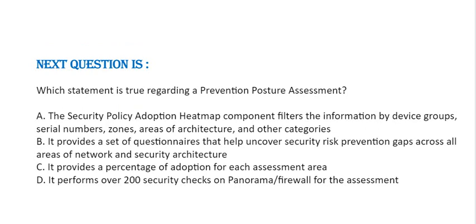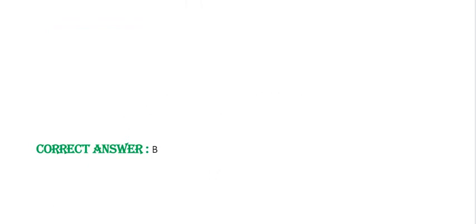Next question: Which statement is true regarding a prevention posture assessment? Option A: The security policy adoption heat map component filters the information by device groups, serial numbers, zones, areas of architecture, and other categories. Option B: It provides a set of questionnaires that help uncover security risk prevention gaps across all areas of the network and security architecture. Option C: It provides a percentage of adoption for each assessment area. Option D: It performs over 200 security checks on Panorama firewall for the assessment. Correct answer is Option B.